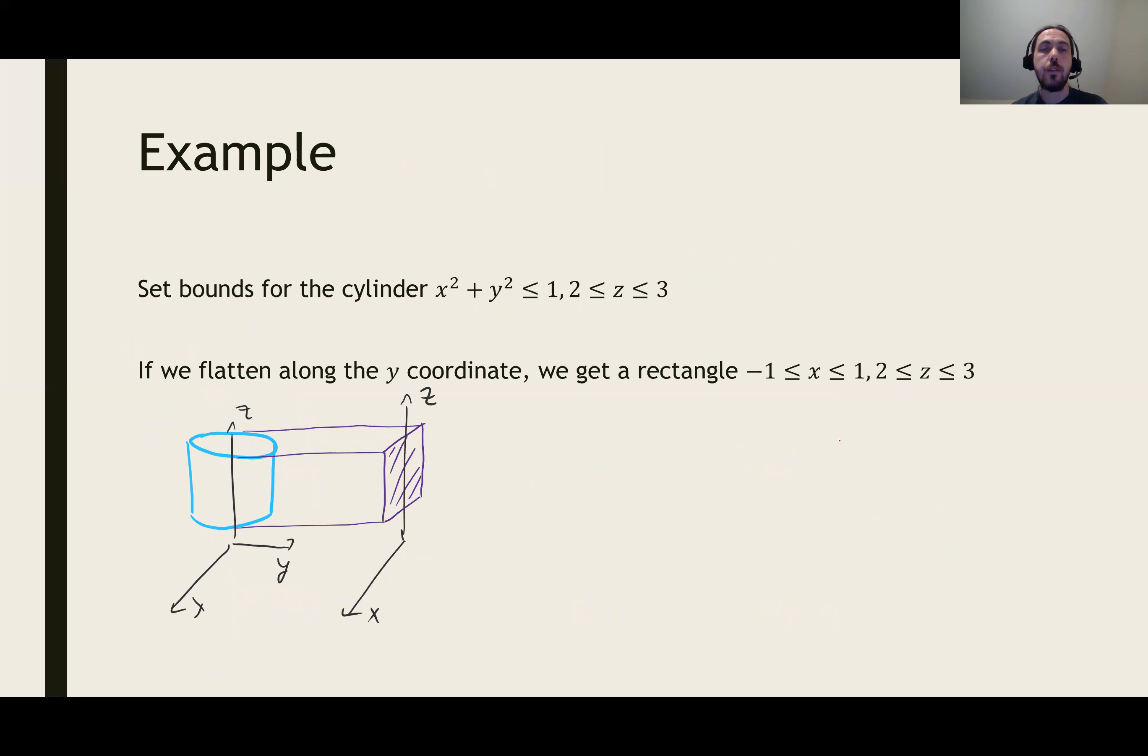Here's another example. This one is going to be a cylinder. The cylinder is x squared plus y squared less than or equal to 1, and 2 is less than or equal to z, less than or equal to 3. And what we're going to do in this case is we're going to flatten along the y coordinate. We imagine taking this cylinder here on the right and looking at it from the side or projecting a light from the side.